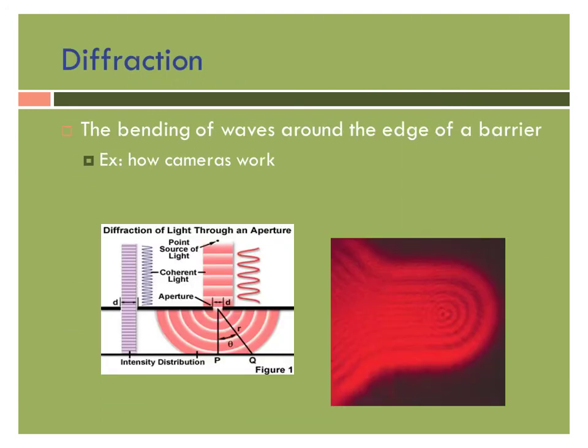Finally diffraction is the last type of interaction we talked about last week. That's when waves bend around the edge of a barrier. This is actually what allows cameras to work. If you use your phone for your camera, many times there's just a tiny little hole that allows the light to go through it. It controls the amount of light or the direction that the light is traveling into the camera. We can talk more in detail about that in class.